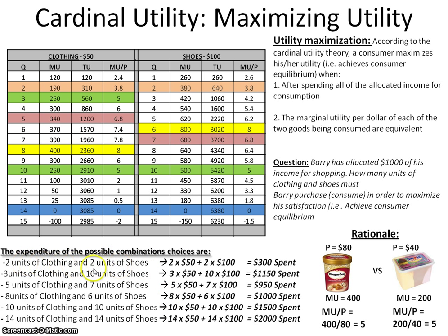We know Barry has $1,000. He cannot spend more than $1,000 because that's beyond his limit, and he will not spend less than $1,000 according to the Cardinal Utility Theory. Whichever highlighted combination adds up to exactly $1,000 gives him equilibrium. That combination is 8 units of clothing at $50 each, giving $400, and 6 units of shoes at $100 each, giving $600. $400 plus $600 equals $1,000 spent. Therefore, Barry would be in equilibrium — maximizing his utility — when he purchases 8 units of clothing and 6 units of shoes.